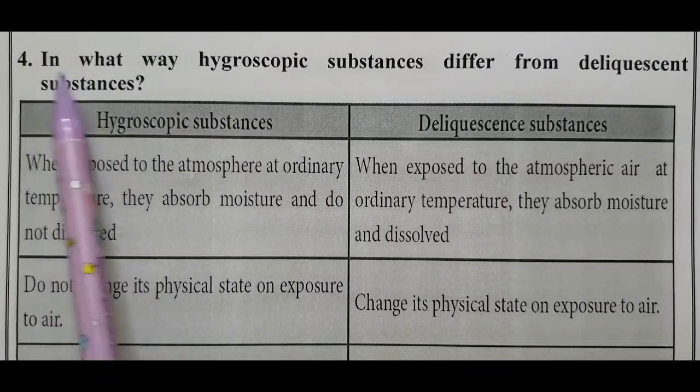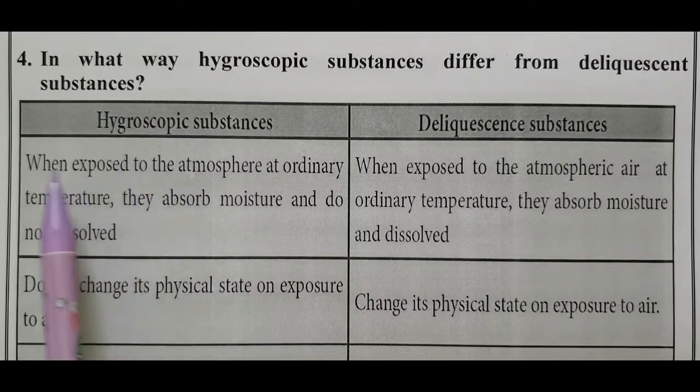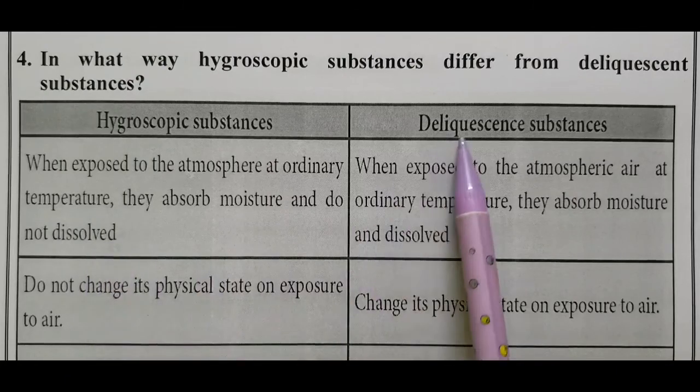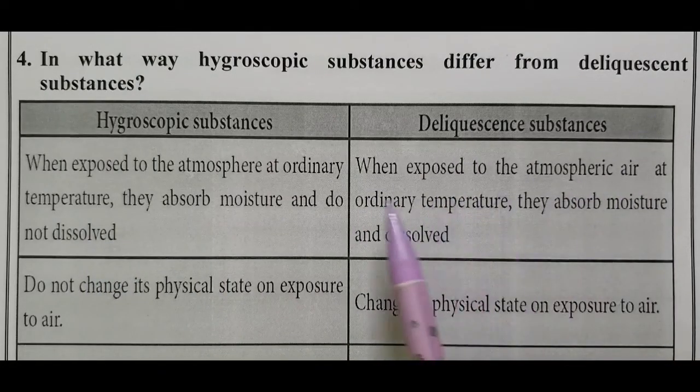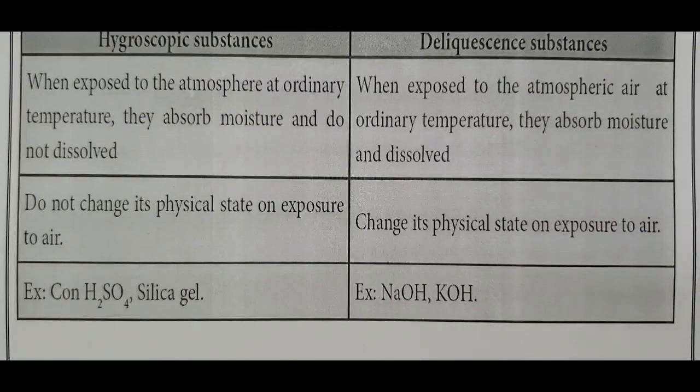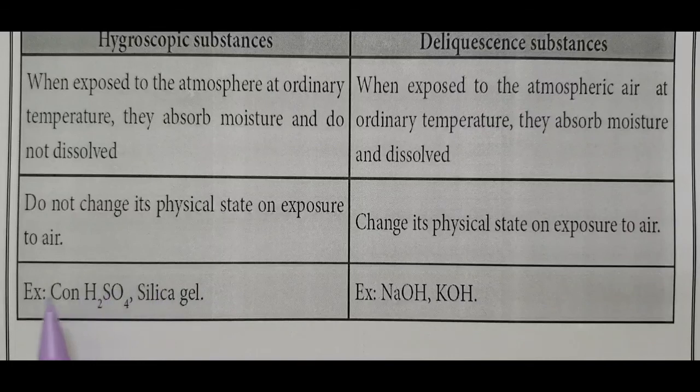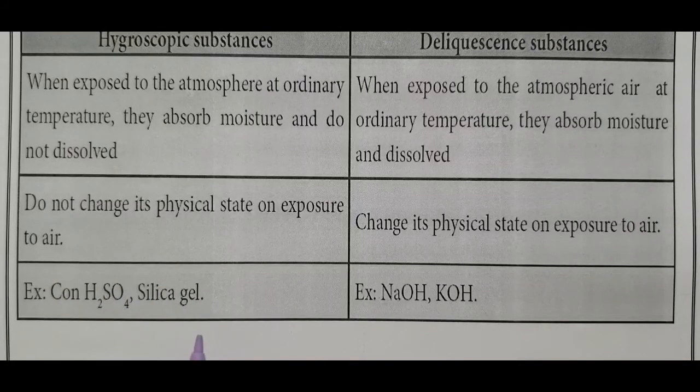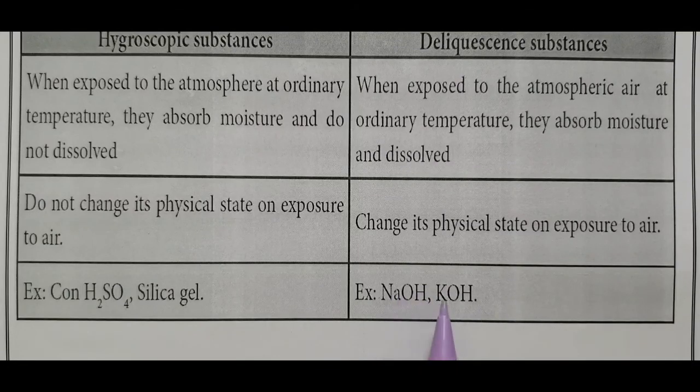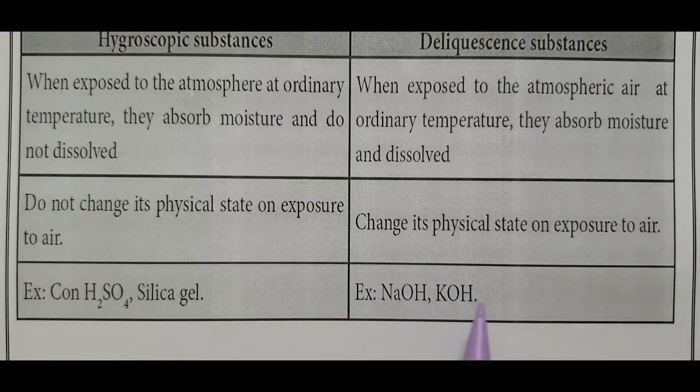Come to the fourth assessment part. In what way hygroscopic substances differ from deliquescent substances? Hygroscopic substances, when exposed to the atmosphere at ordinary temperature, they absorb moisture and do not dissolve. Hygroscopic substances do not change their physical state on exposure to air. For example, concentrated sulfuric acid H2SO4, silica gel, used as an adsorbent, used as a dehydrating agent. Deliquescent substances, when exposed to the atmospheric air at ordinary temperature, they absorb moisture and dissolve. Change their physical state on exposure to air. For example, sodium hydroxide NaOH, potassium hydroxide KOH pellets are placed on the table, exposed to the atmosphere. It dissolves. It is converted into a liquid, exothermic reaction.